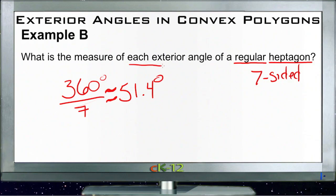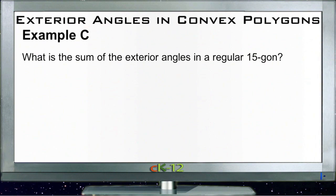Let's take a look at Example C. Example C asks us what is the sum of the exterior angles in a regular 15-gon. Well, this one sounds like it might be a little difficult because it's got a 15-sided figure, but all we have to know here is that we're looking for the sum of the exterior angles, and our rule tells us that the sum of the exterior angles is always 360 degrees.